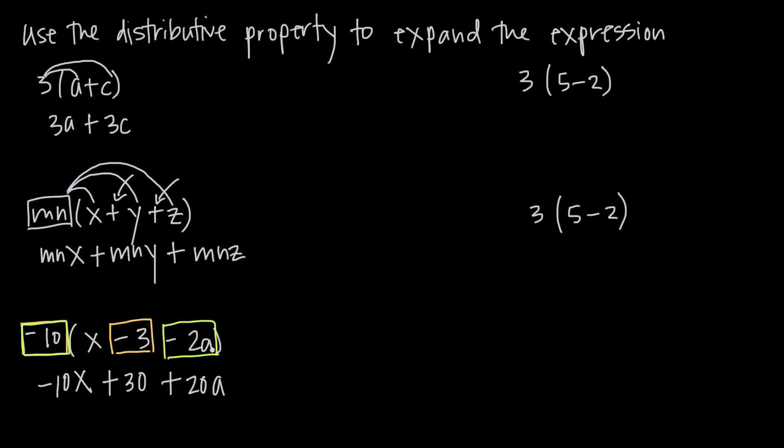Now the great thing about math is that as long as we apply the rules correctly, they work every time. So let's look at an example that sort of proves to ourselves that the distributive property works. Let's look at 3 times the quantity 5 minus 2. Let's put the distributive property aside for a second and think instead about order of operations.